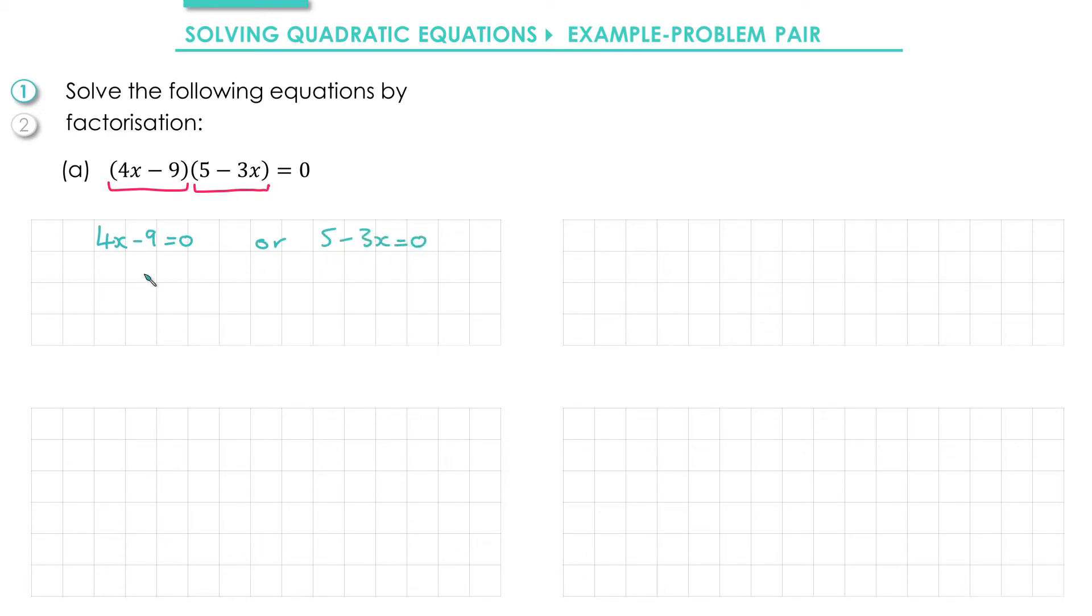Let's solve both of these equations. Adding 9 to both sides gives us 4x = 9 and then dividing through by 4 gives us x = 9/4. For the second equation, adding 3x to both sides gives us 5 = 3x and then dividing by 3 gives us x = 5/3.